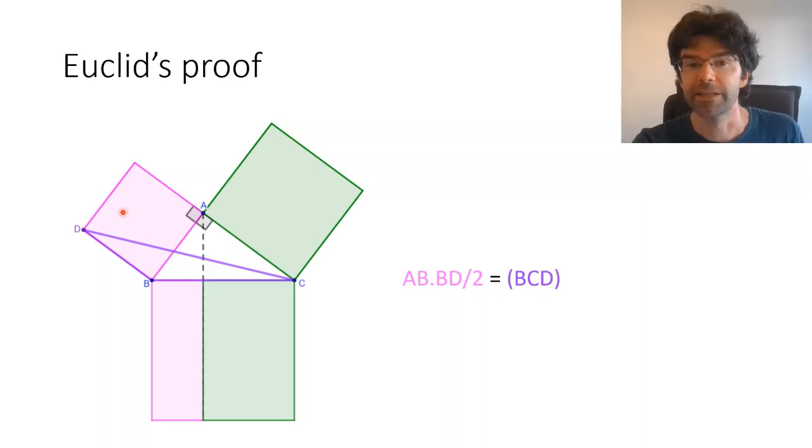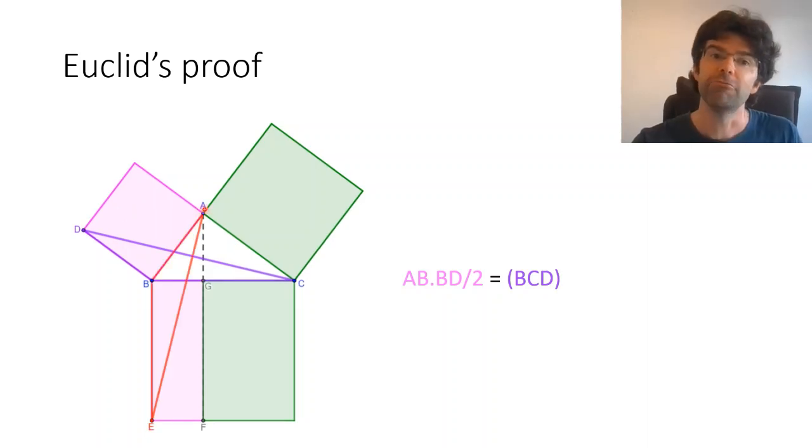And now we draw in the second line here and compare the red triangle, ABE, to the purple one. Because we're dealing with squares, we have BD being the same length as BA, BC being the same length as BE, and the angles at B in both of these triangles are a right angle plus angle ABC. So the two triangles are therefore congruent. In modern terms, the red triangle is just the purple one rotated around point B by 90 degrees.